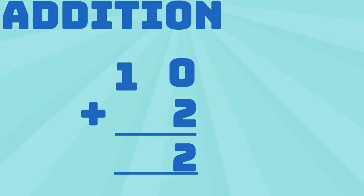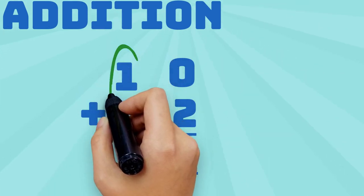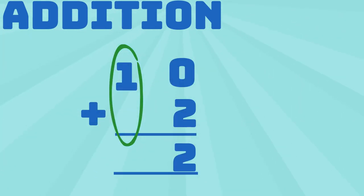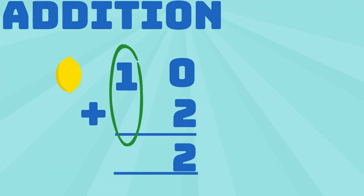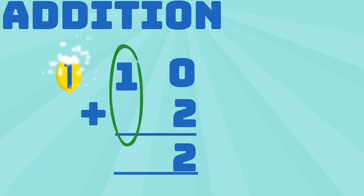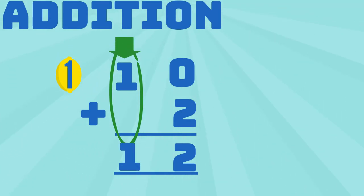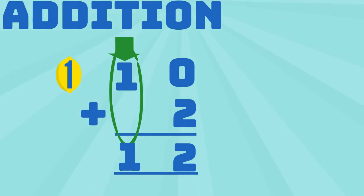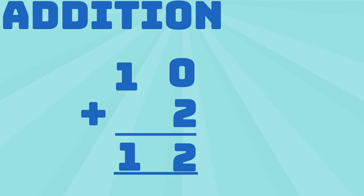Let's now calculate 1 plus 0. 1 lemon plus 0 lemons equals 1. That means 1 plus 0 equals 1. So, 10 plus 2 equals 12.